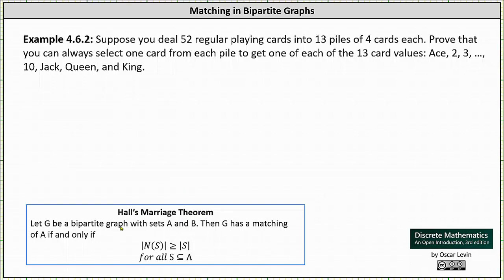Recall that Hall's Marriage Theorem states, let G be a bipartite graph with sets A and B. Then G has a matching of A if and only if the cardinality of N(S) is greater than or equal to the cardinality of S for all S, which are subsets of A.